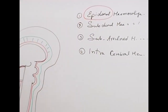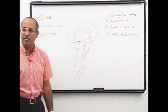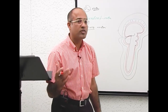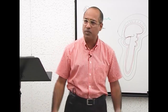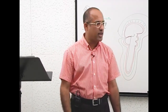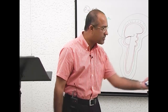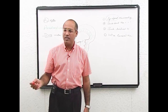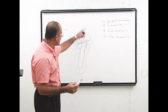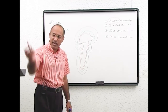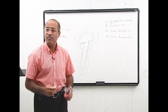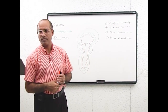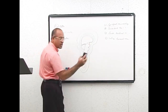Where does epidural hemorrhage occur? Epidural hemorrhage, or epidural hematoma, or epidural bleeding, is in the epidural space. Where is the epidural space? A student answered: it is between the meningeal layer and the skull.